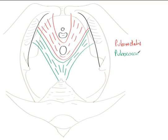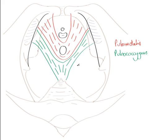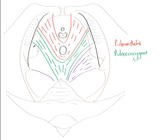The third muscle is iliococcygeus, which comes from the more posterior end of the tendinous arch and extends towards the coccyx. Here we can see iliococcygeus in purple extending from the more posterior region of the tendinous arch towards the ischial spine and running towards the coccyx and the inferior aspect of the sacrum. We have one on the left and one on the right side.